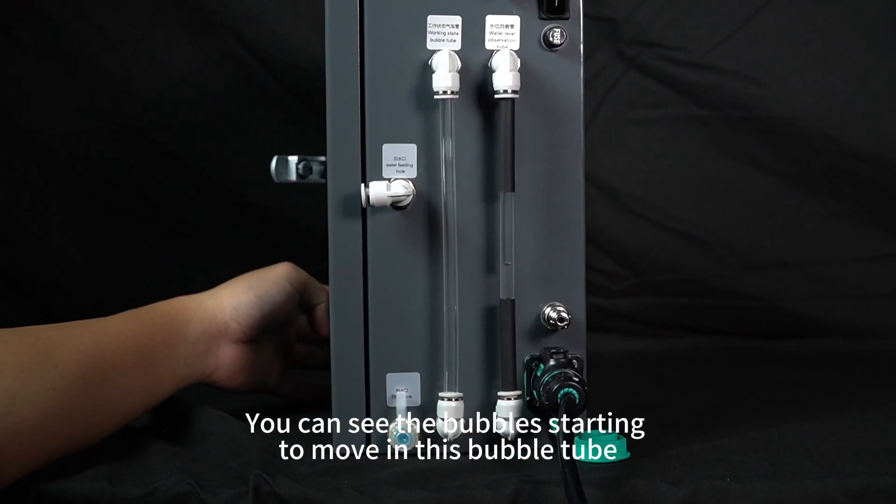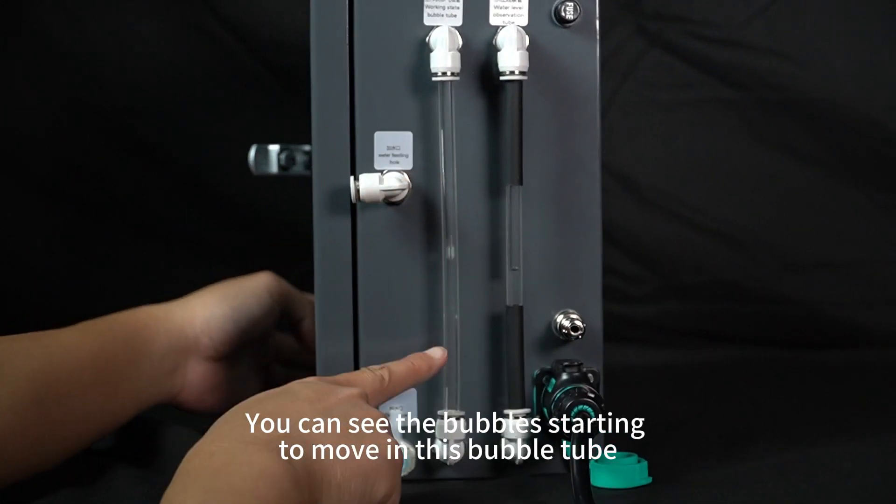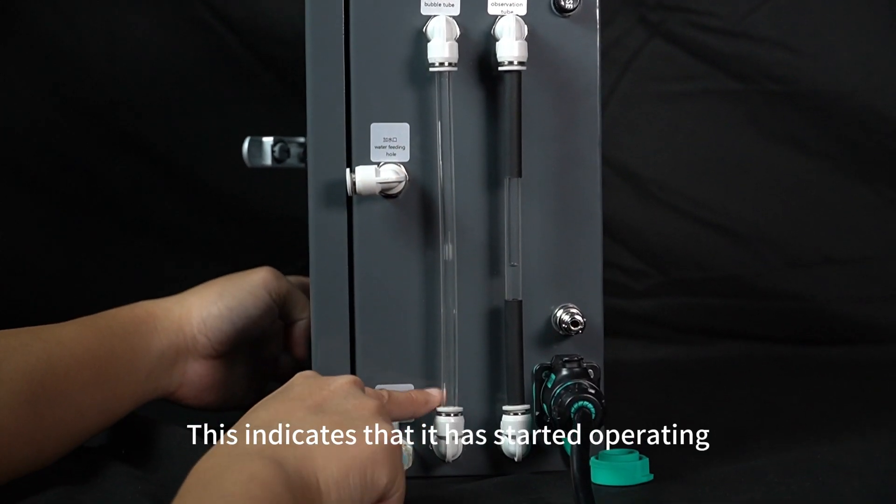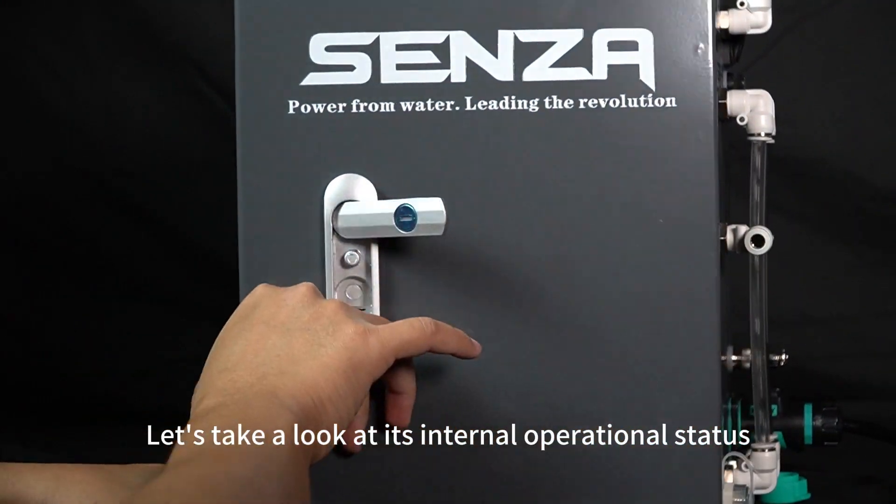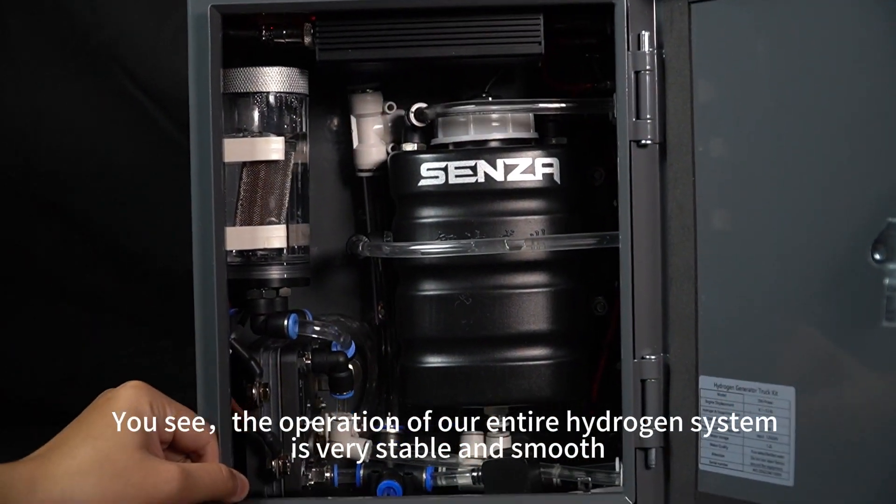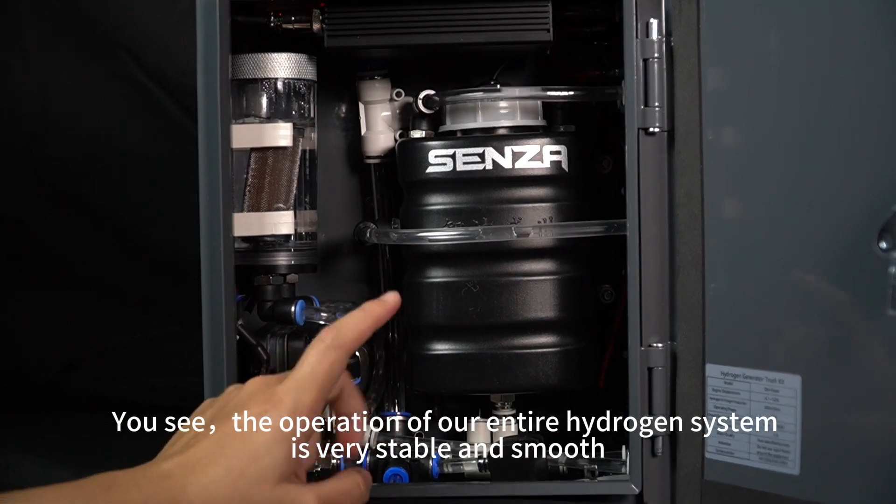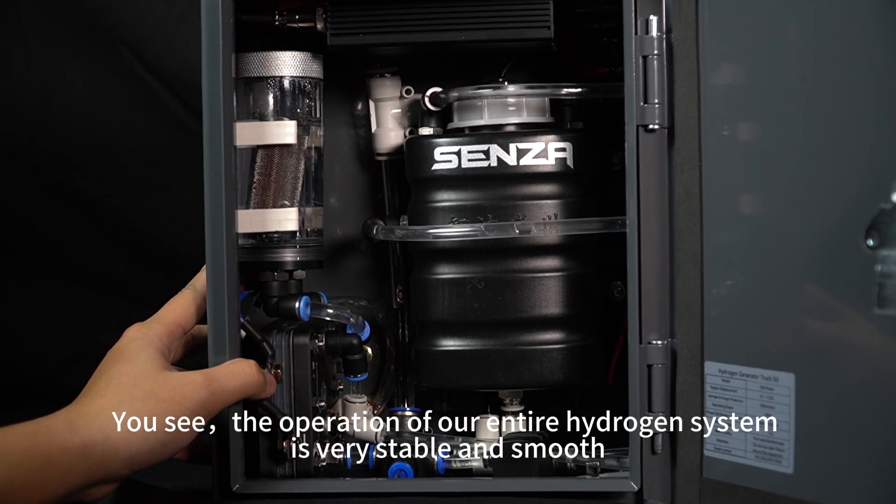You can see the bubbles starting to move in this bubble tube. This indicates that it has started operating. Let's take a look at its internal operational status. The operation of our entire hydrogen system is very stable and smooth.